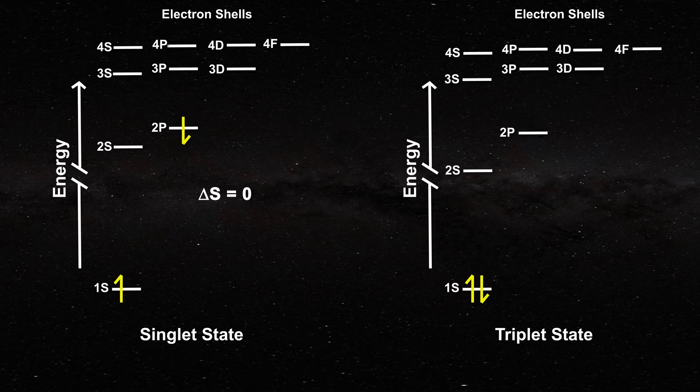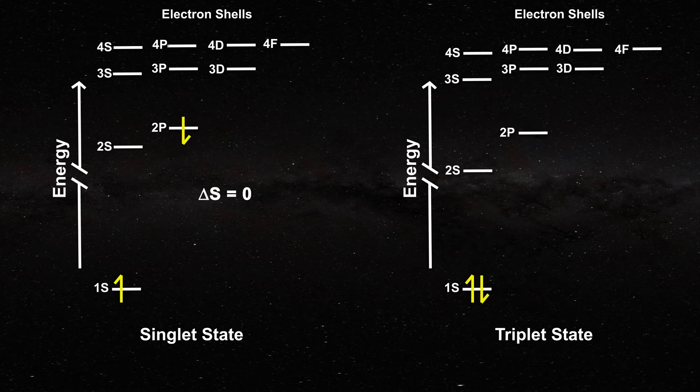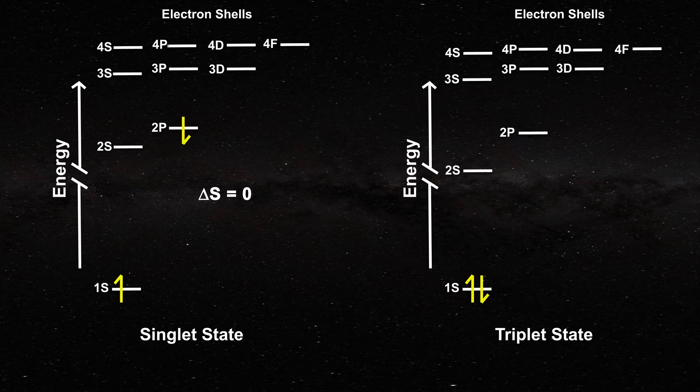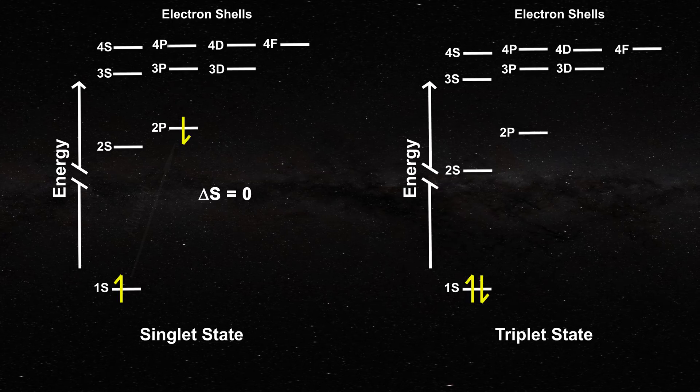So, if the electron spin is down in the lower energy state, it will remain down in the upper energy state. In chemistry, this transition is said to be allowed by the selection rules.